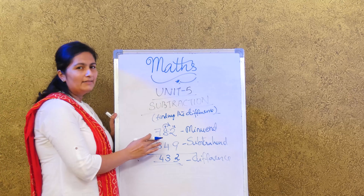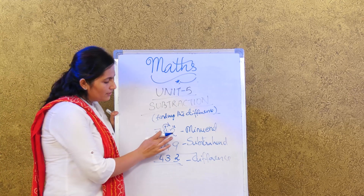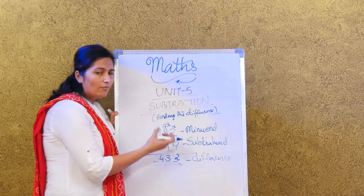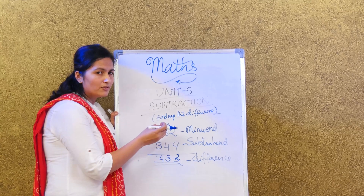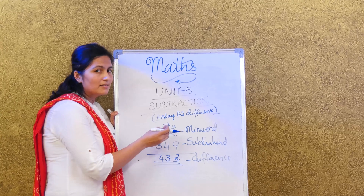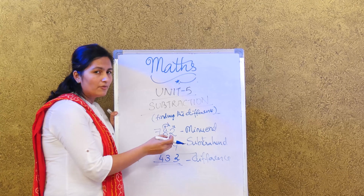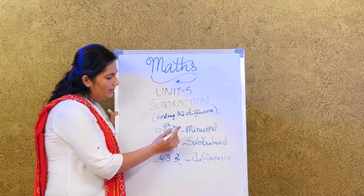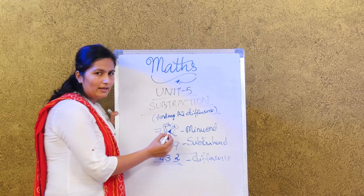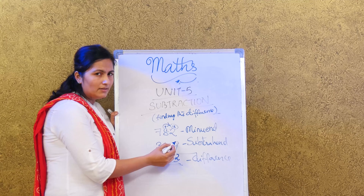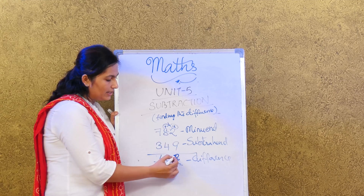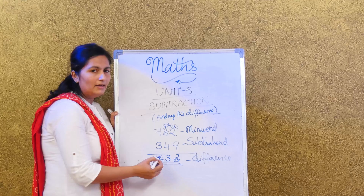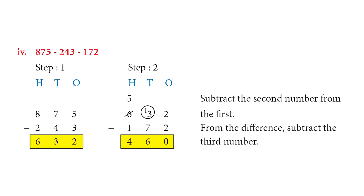Did you see that 2 is smaller than 9? So we have to borrow. If you have to subtract a small number from a big number, we always have to borrow. When we borrowed 1 from here, this 2 became 12. So we subtracted 9 from 12 and got the answer 3, and then the rest of the subtraction follows.